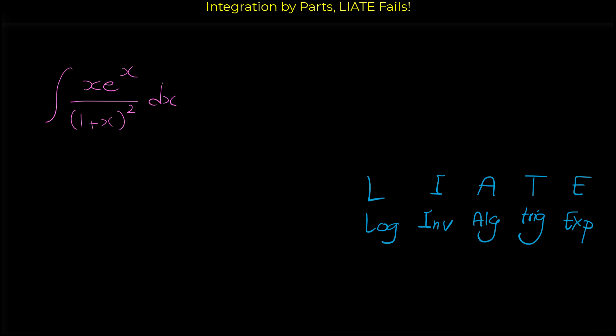In this example we have x. If we choose u as x, you cannot find this integral with the integration by parts method — integration by parts fails if we choose u as x. And also if you choose the denominator as u, then again you cannot find this integral with the integration by parts method.